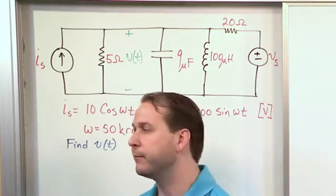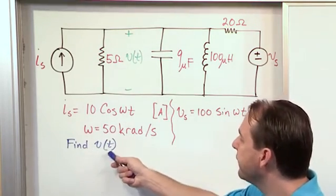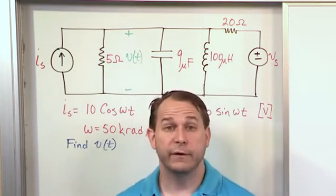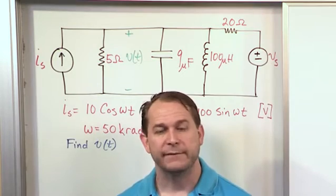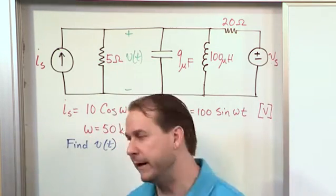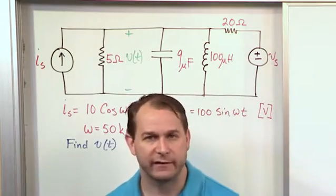But the other part of the thing you need to realize is that they're asking for v as a function of t. So eventually you'll use phasors and node voltage phasor methods to calculate v, phasor v, but you can't circle that as your answer. We need to convert back to the time domain, which we all know how to do. And we'll do that as our last step.